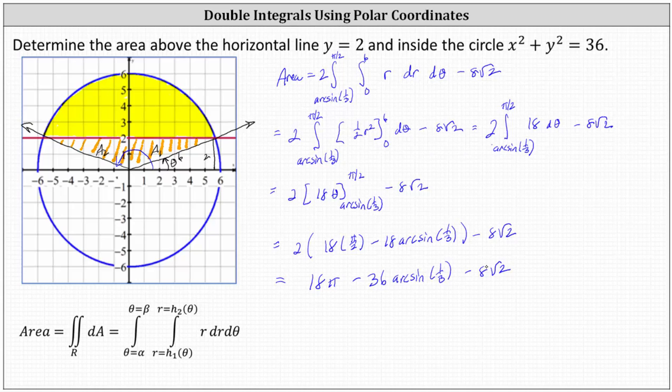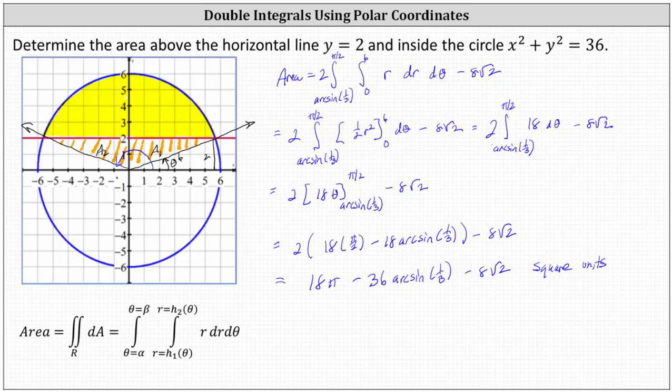This is the exact area of the yellow bounded region. This would be square units. And the decimal approximation is 33.0008 square units. I hope you found this helpful.